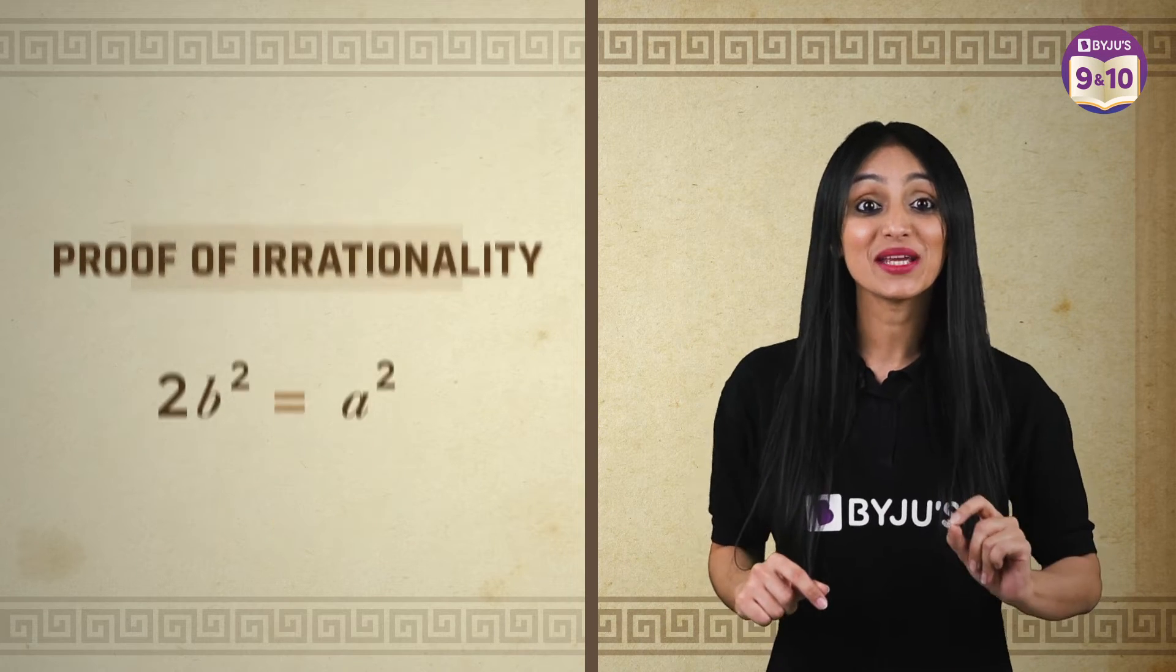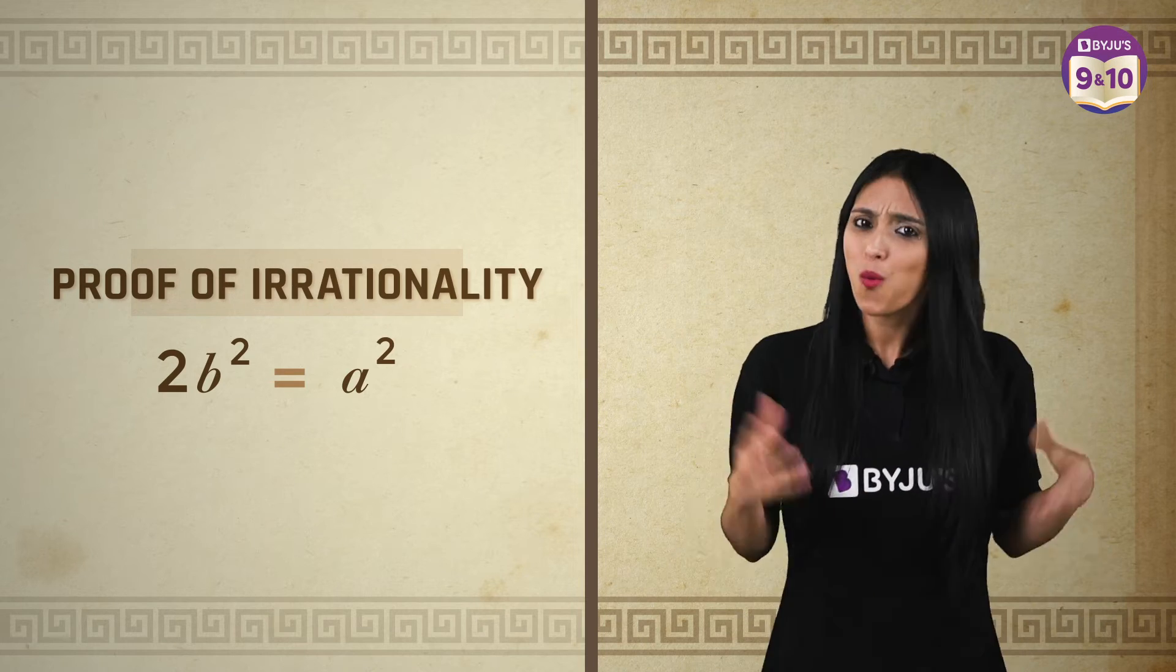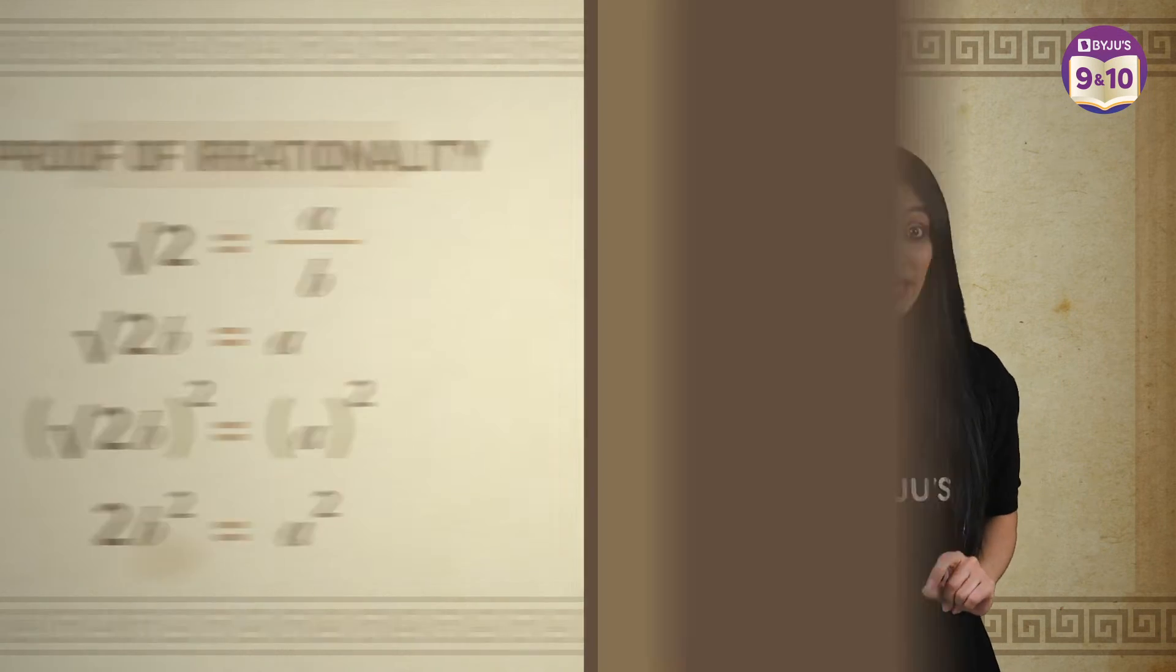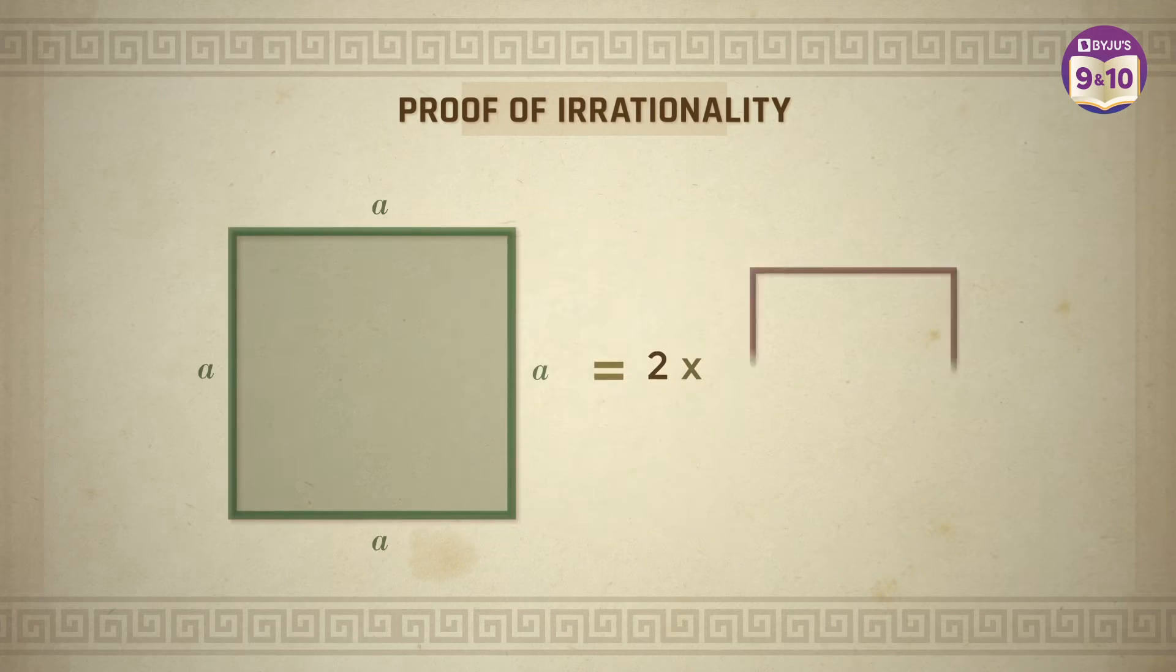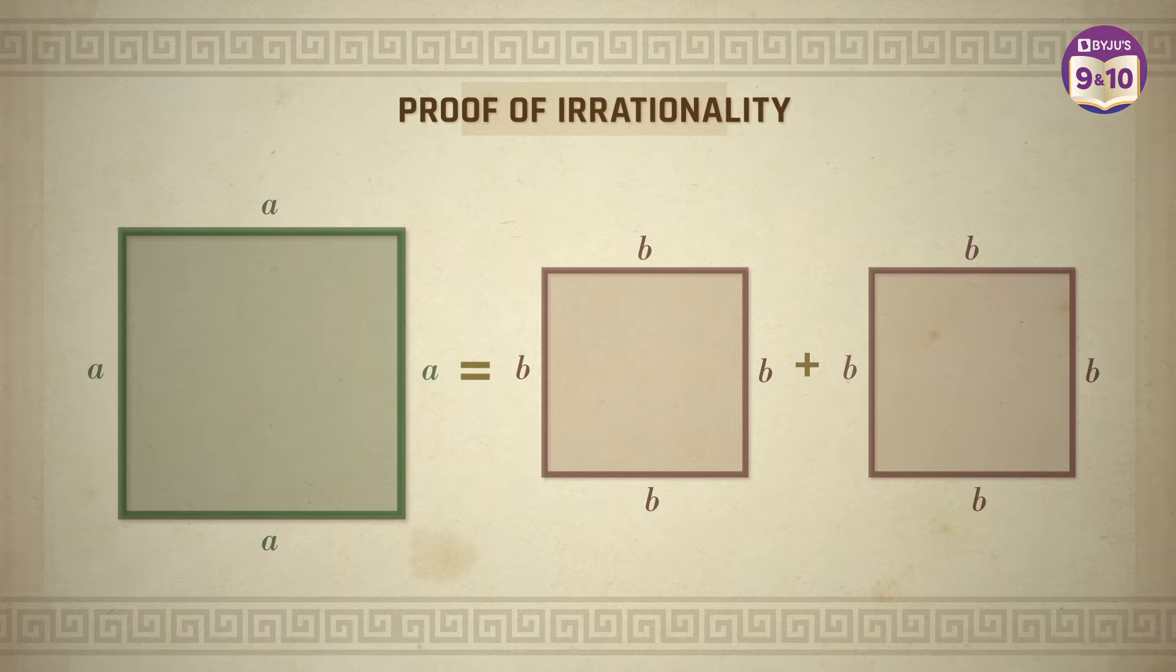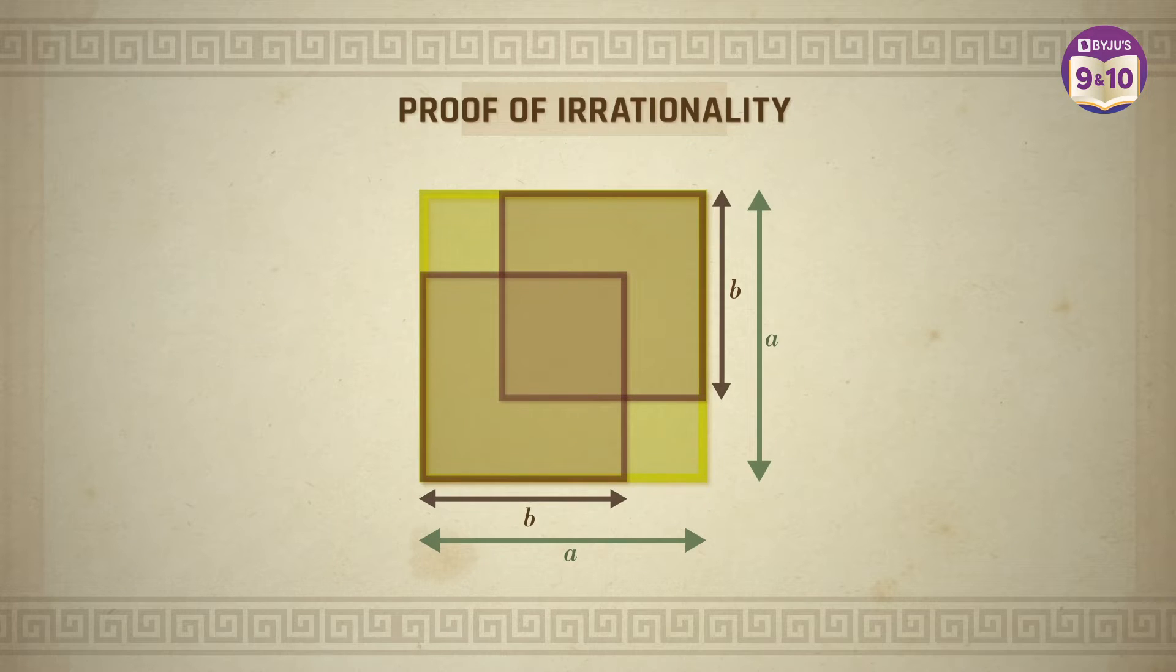We got 2b square equals a square. What does this mean? As per the equation, if we take a square of side length a, then the area of this square will be equal to twice the area of a square of side length b. So ideally, two squares of side length b should completely fit inside a square of side length a.